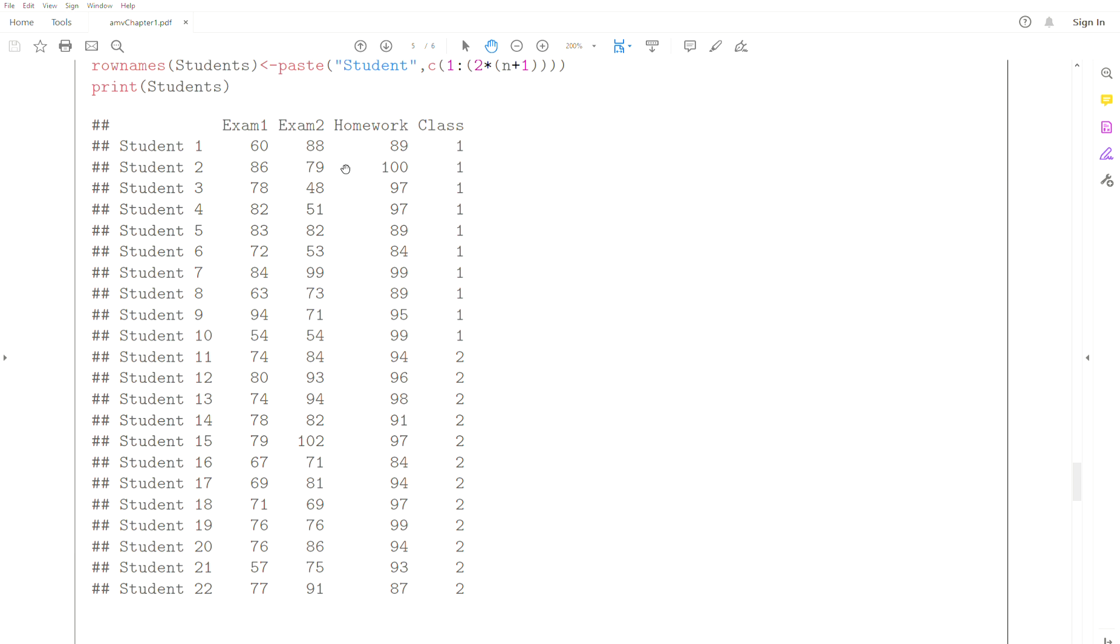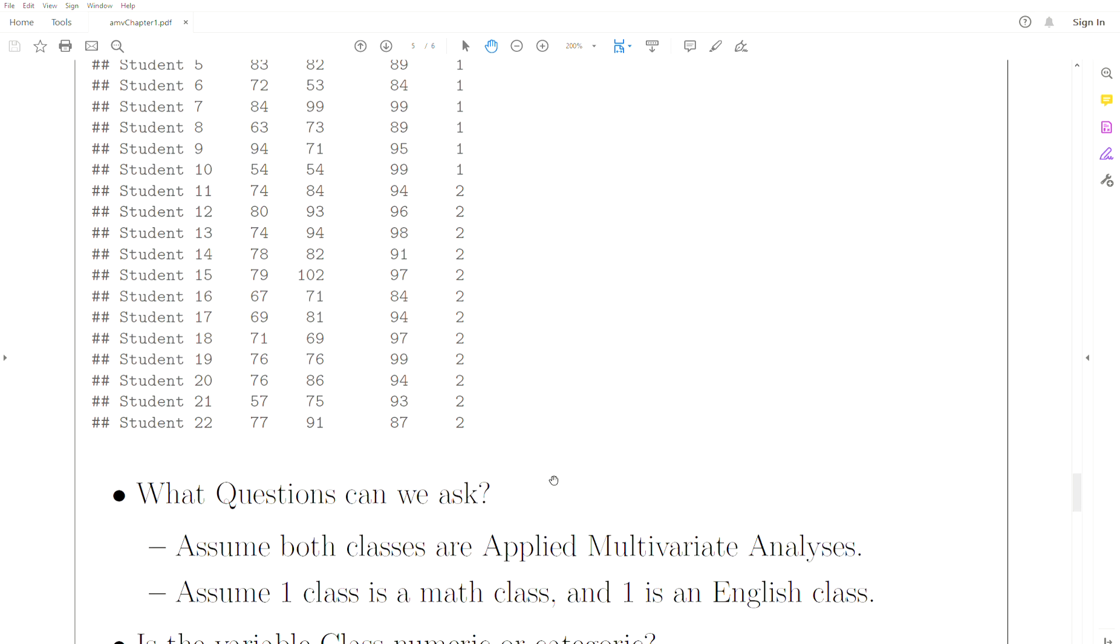But is there a different way to combine those? Maybe we up-weight exams and down-weight homework or vice versa? Is there some optimal linear combination of those variables that captures the essence of how they did in a class?